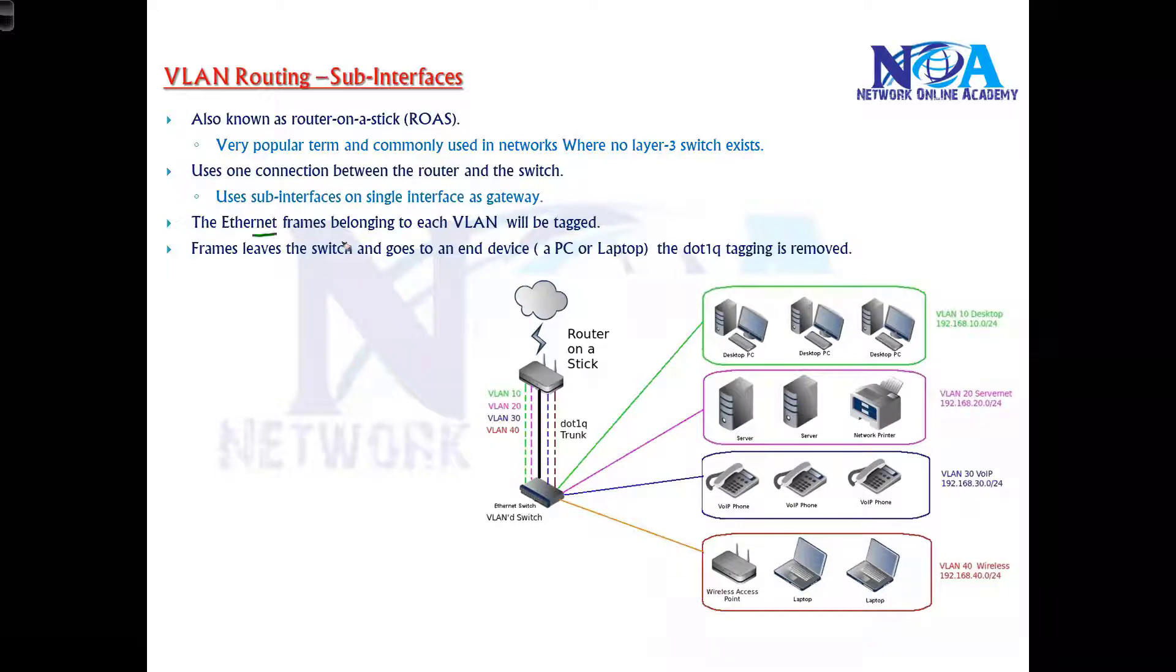Apart from that, of course the interfaces will be tagged. So of course there is some additional configurations we have to do, because when the router is configured with sub-interfaces, so we do some kind of trunking also here. Trunking is required. And again when the packet is going to the end devices, it will just go without any tag normally.